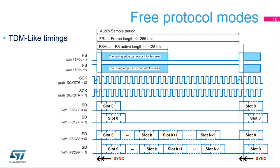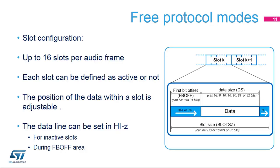In TDM-like protocol, only one edge of the frame synchronization, rising or falling, is used to align the slot's position. The frame length, duty cycle, and polarity can be adjusted. The clock strobing edge can be selected. The position of the slots with respect to the frame active edge can be selected. The number of slots per frame, up to 16, can be selected. The slot size is always bigger than or equal to the data size. The SAI allows control of the position of the data inside each slot and setting of the unused slots to HIZ if needed. This function can be useful when the data line is shared between several devices.